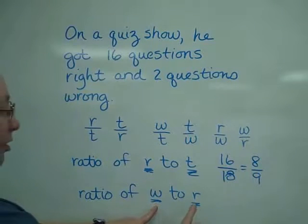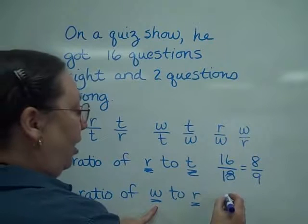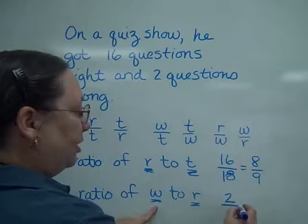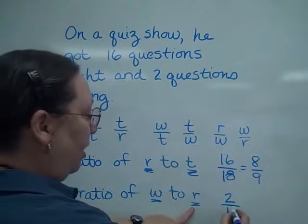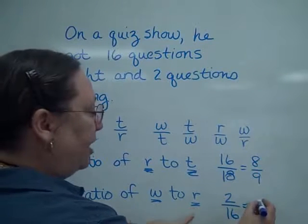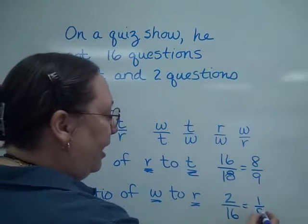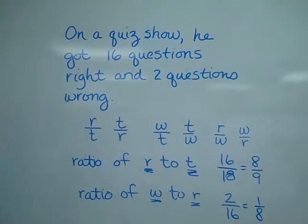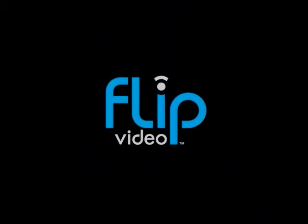Okay, now the wrongs to the right, the wrongs go in the top because they're listed first, the rights go in the bottom, and of course because it's a fraction, you must simplify to get a ratio of 1 eighth.